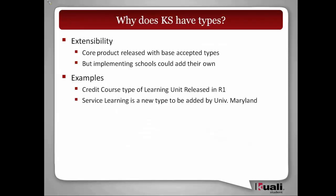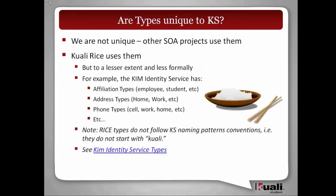So what is the KSS type? It's basically there so we can extend what we're building and deploying in the system. For example, a credit course type is a learning unit released as part of curriculum management. But a new service learning type could then be added by the University of Maryland to model new experiential learning programs. These types apply not just to learning units — they apply to almost all the objects in the system.